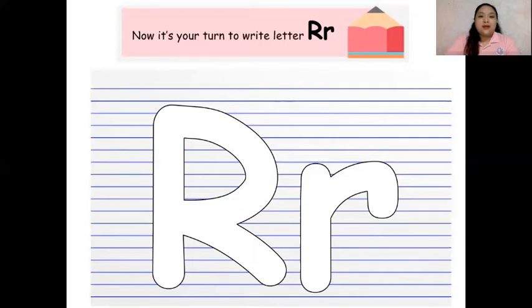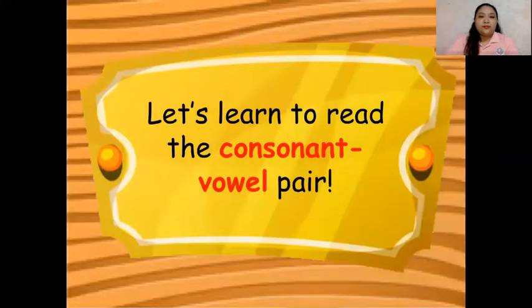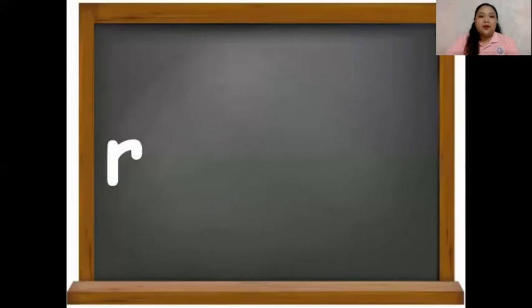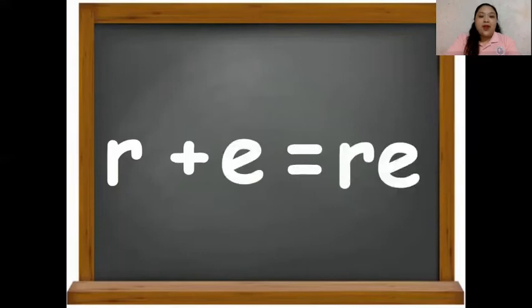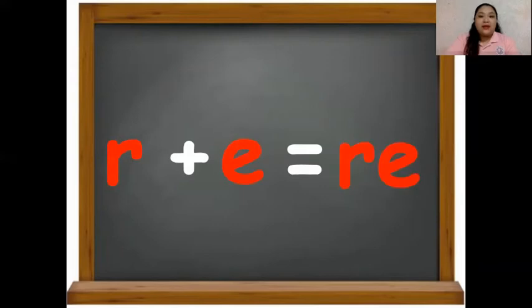Let's learn to read the consonant vowel pairs. R plus a is ra. R, a, ra. R plus e is re. R, e, re. R plus i is ri.